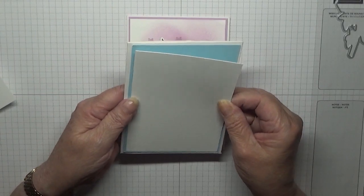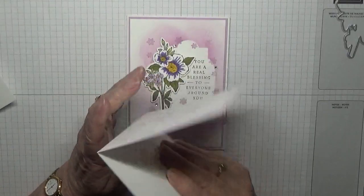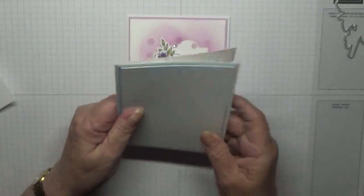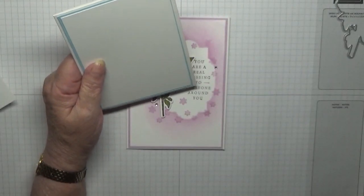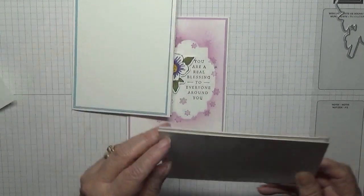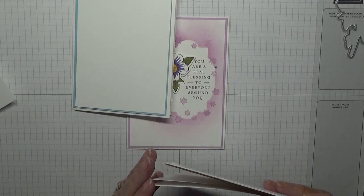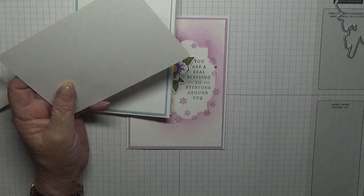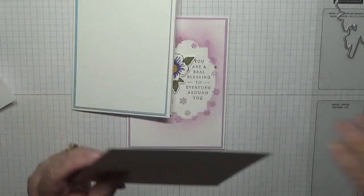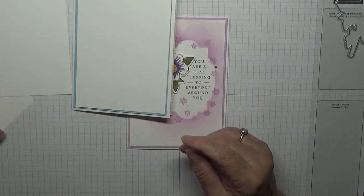And I have an inside piece of five and five eighths by three and three quarters for the inside.